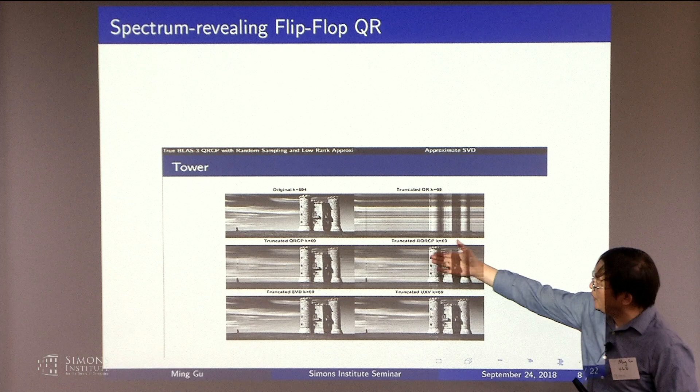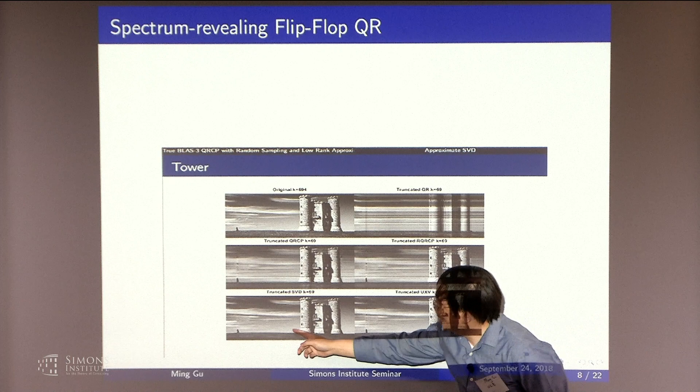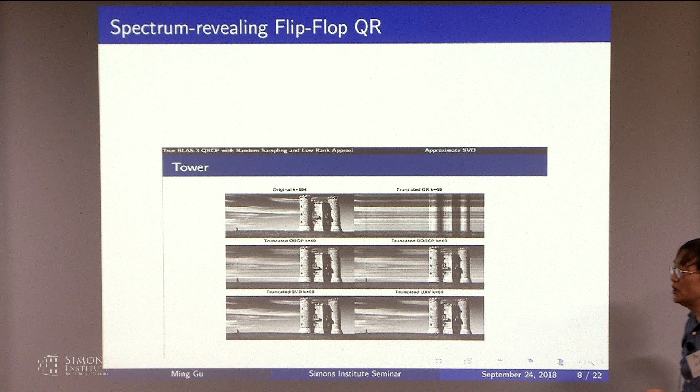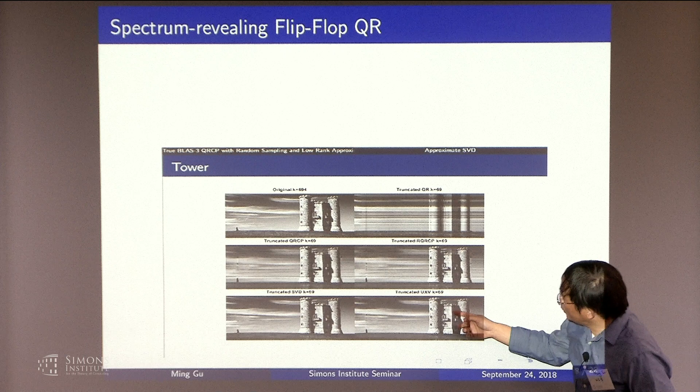If you do a truncated SVD, this would be, again, rank 60. And you can see that this picture looks very close to the original picture. You do lose something, but it looks to the eye, the difference is very small.